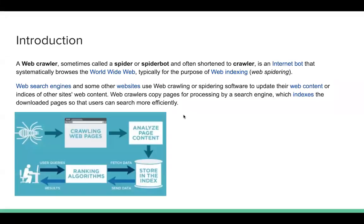A web crawler — sometimes called a spider or a spider bot, and often just called a crawler — is an internet bot that systematically browses the World Wide Web, typically for the purpose of web indexing. Web search engines like Google and other websites use web crawling or spider software to update their web content or indexes of other sites' web content. Here is an example of a spider that can crawl web pages.